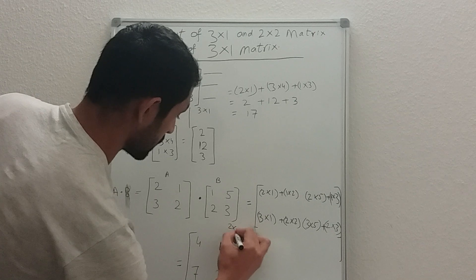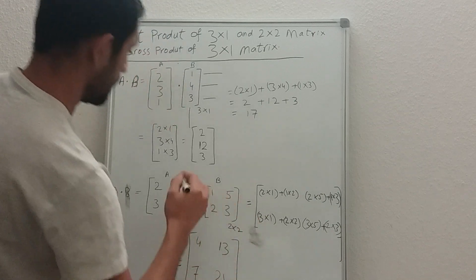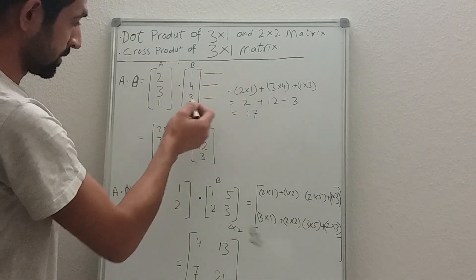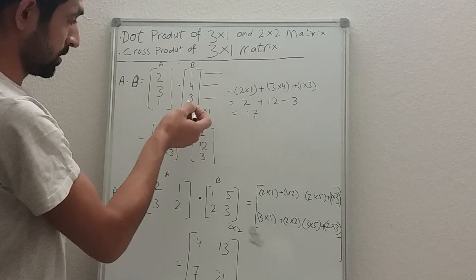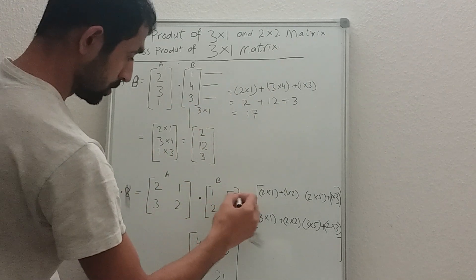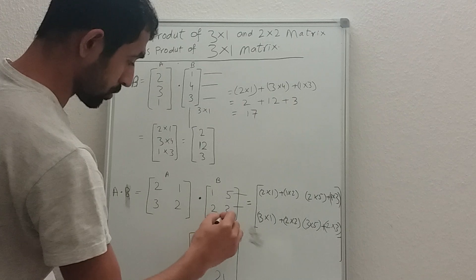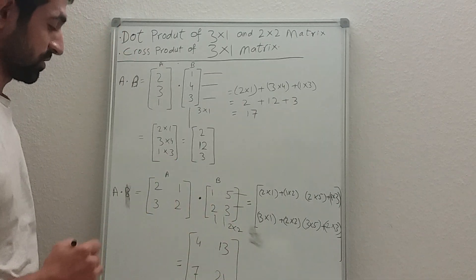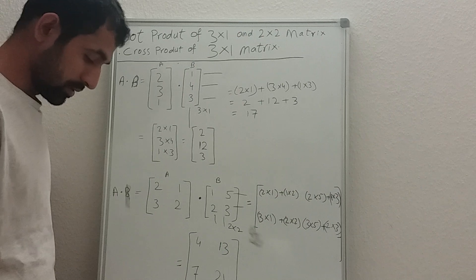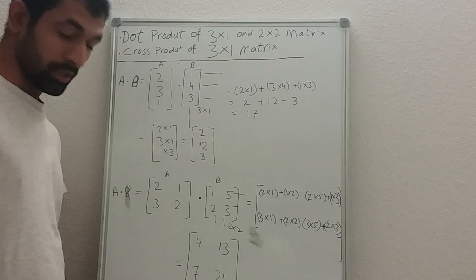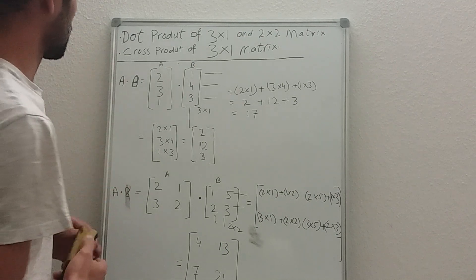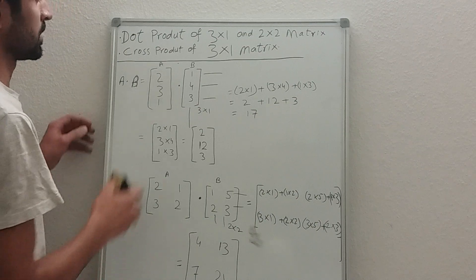This is a two-cross-two result. In the previous question we had three rows and one column — a three-cross-one matrix — and here we have two rows and two columns, a two-cross-two matrix. Now the last topic for today is how to calculate the cross product of a three-cross-one matrix.